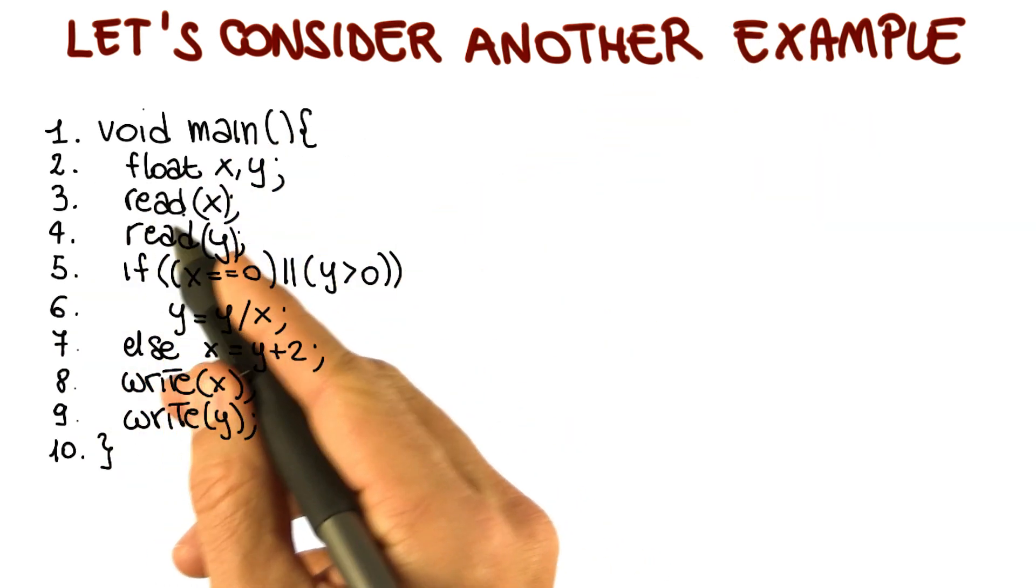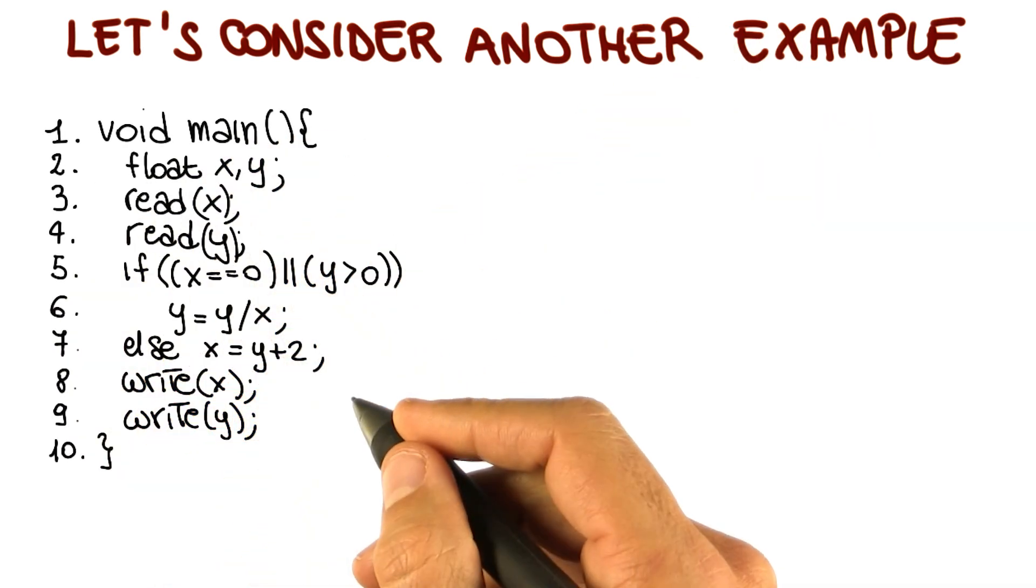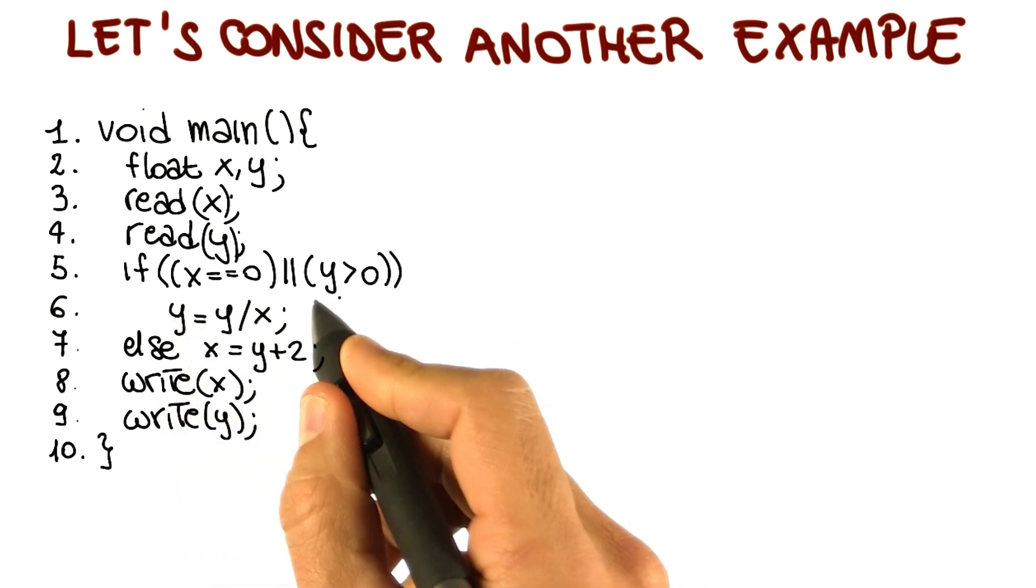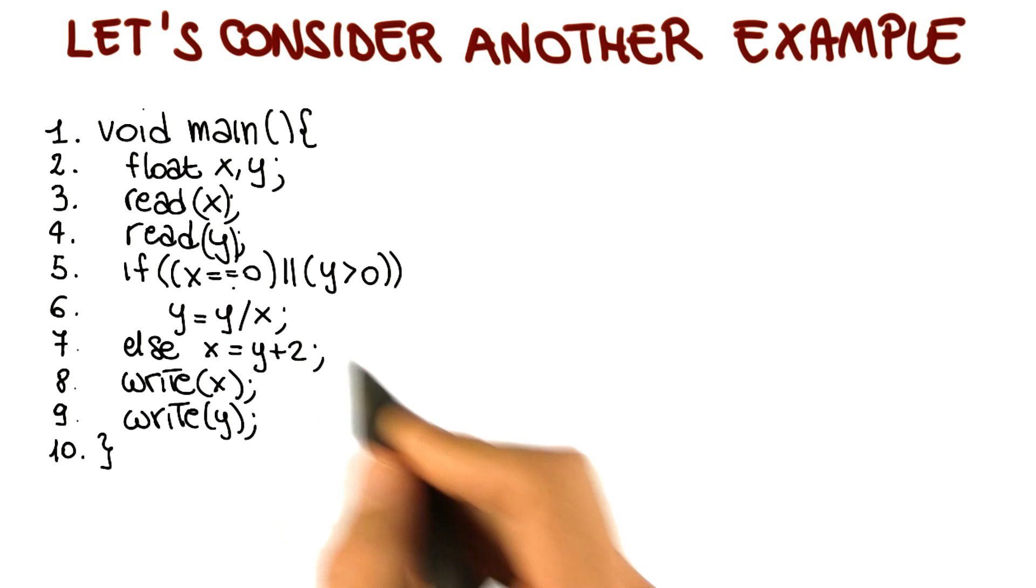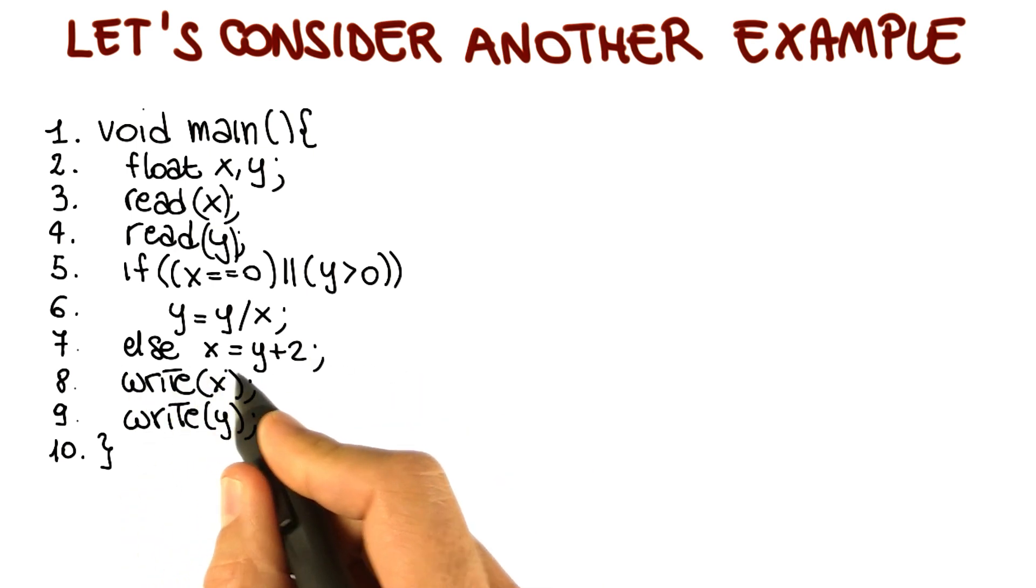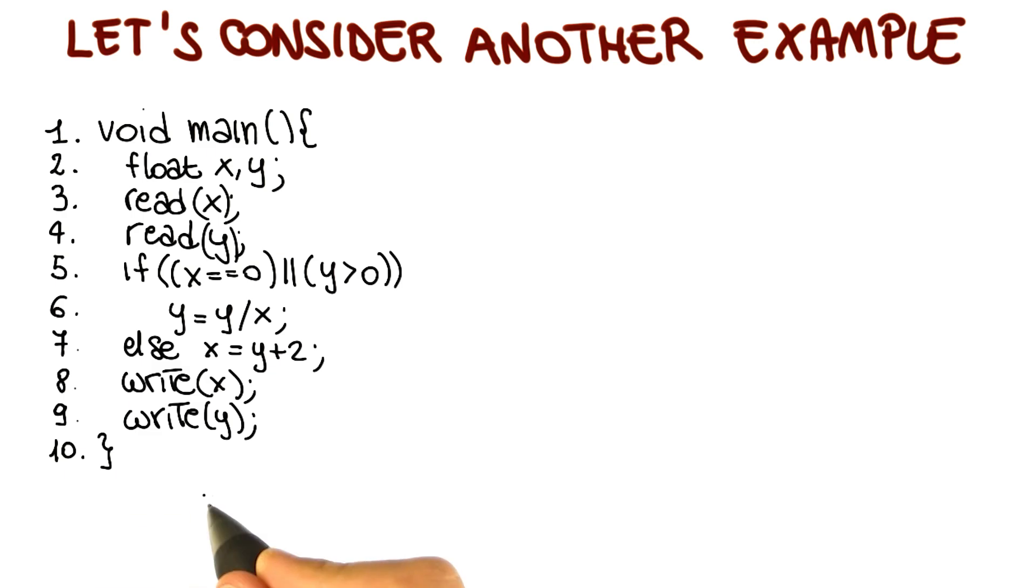What I'm showing here is a program that reads two real numbers, x and y, and then if x is equal to 0 or y is greater than 0, it computes y as y divided by x. Otherwise, it computes x as y plus 2. Then it writes the value of x, the value of y, and it terminates.